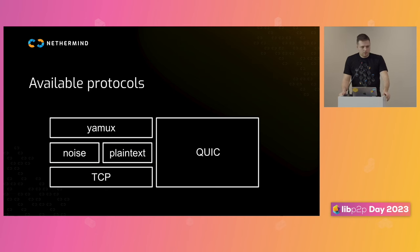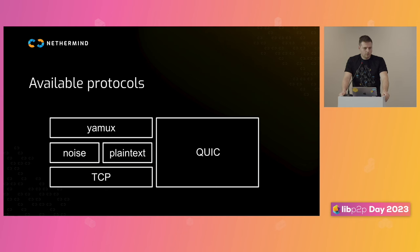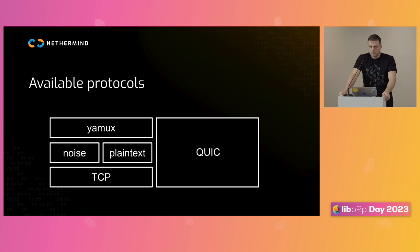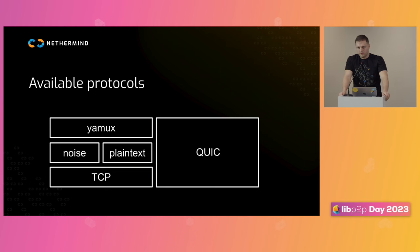Let me dig into details. We have two stacks implemented: a TCP stack, which is quite stable and has Noise and Yamux as a multiplexer. We also tried QUIC, which is promising, performant, and a simple transport. We specifically use the MS QUIC implementation of it, which is cross-platform, and everybody recommended it because it's good.